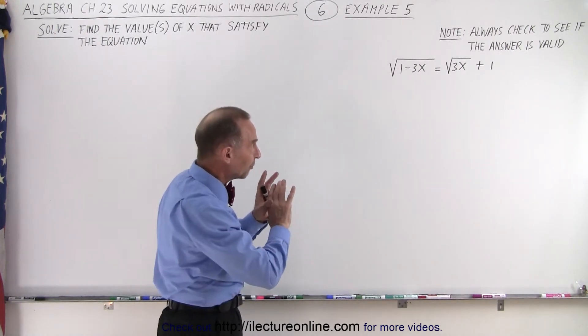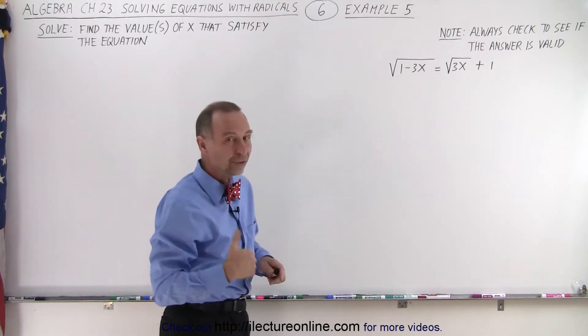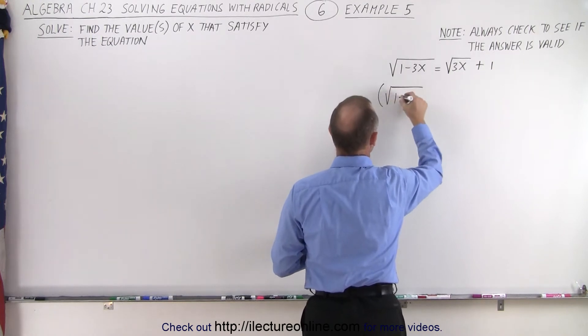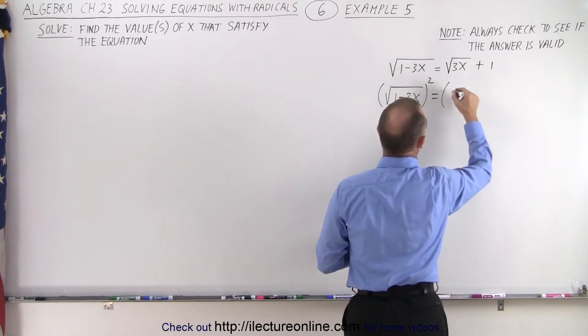You're going to square both sides, but first separate the two radicals, square both sides, and then see what happens. So we're going to square the left side, and we're going to square the right side.